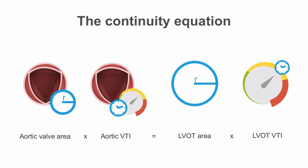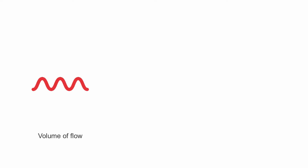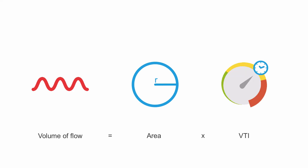The aortic valve area is derived from a calculation known as the continuity equation. The continuity equation is based on the idea that the volume of blood passing through the left ventricular outflow tract is equal to the volume of blood that passes through the aortic valve. The volume of flow through an area is equal to the cross-sectional area multiplied by the flow velocity over time — that's the velocity-time integral.